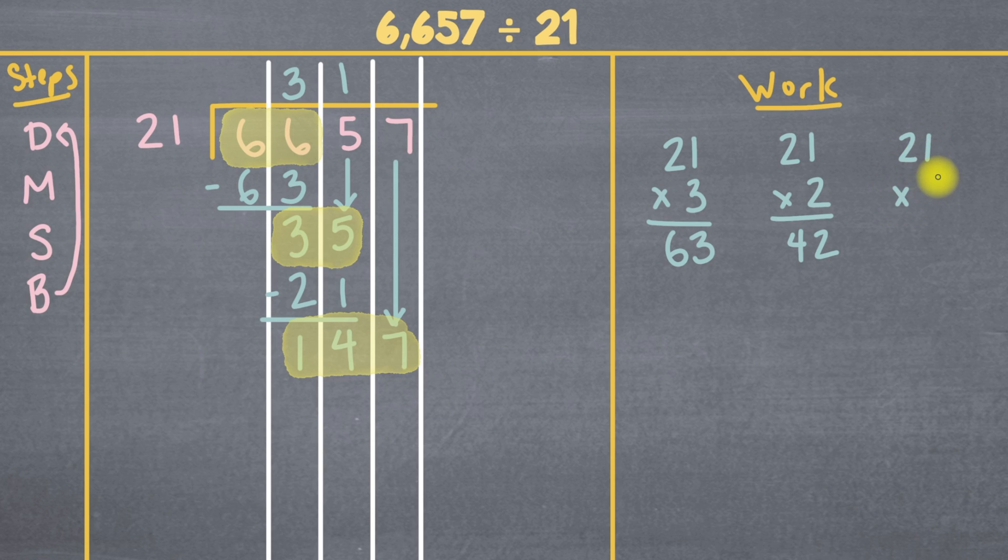Let's try 21 times 5. 21 times 5. 5 times 1 is 5, 5 times 2 is 10. And that's 105. We can definitely go a little bit higher. Let's try 21 times 7. 21 times 7. 7 times 1 is 7, 7 times 2 is 14.